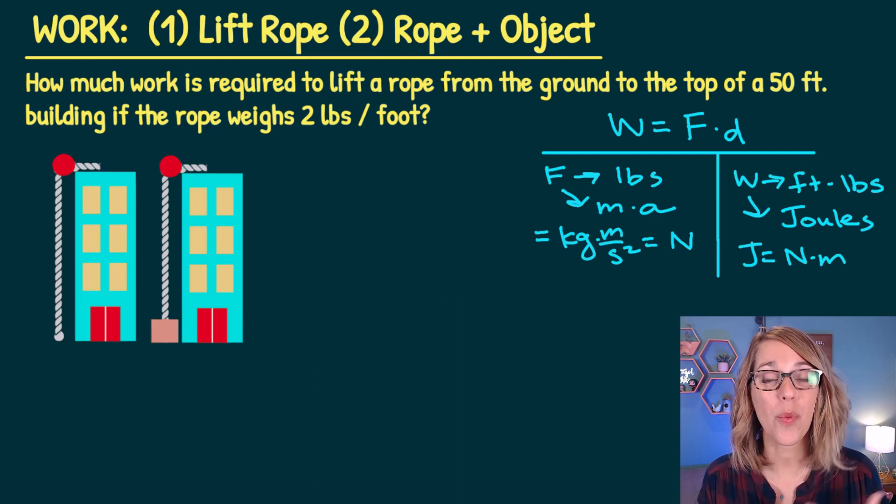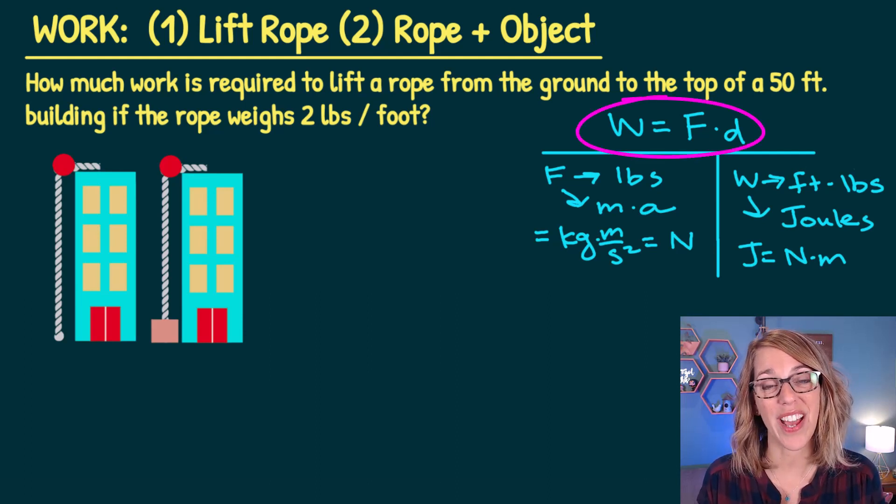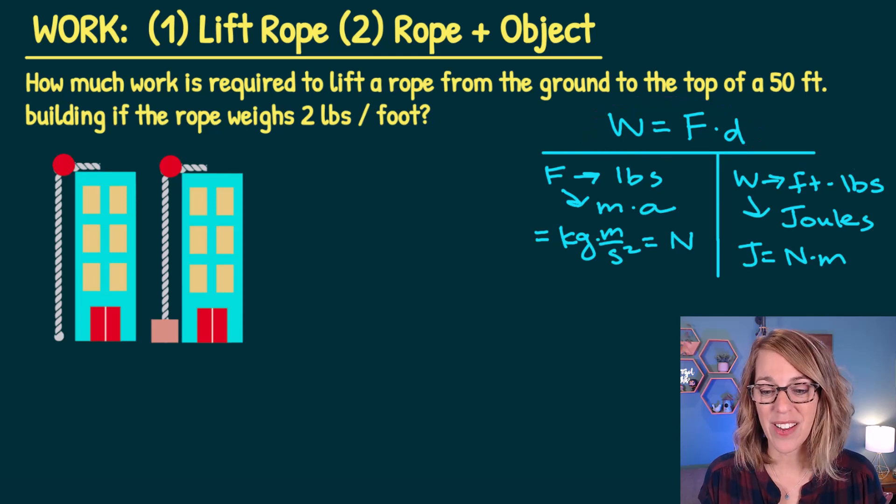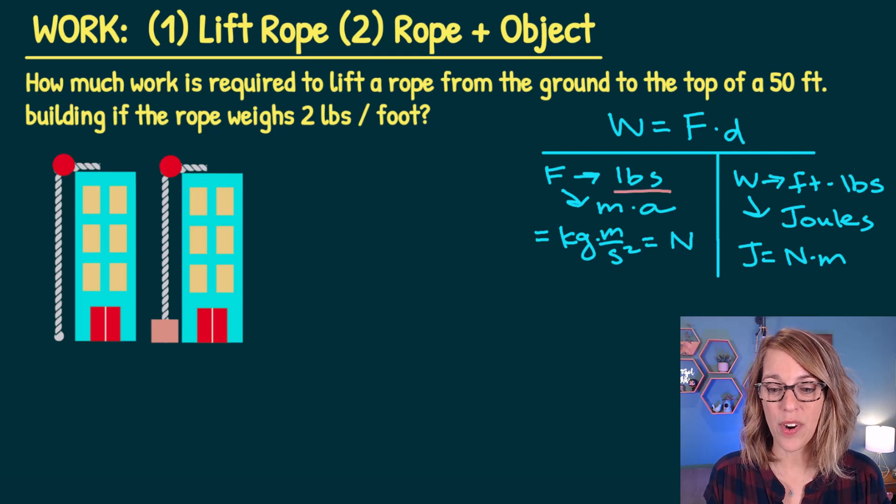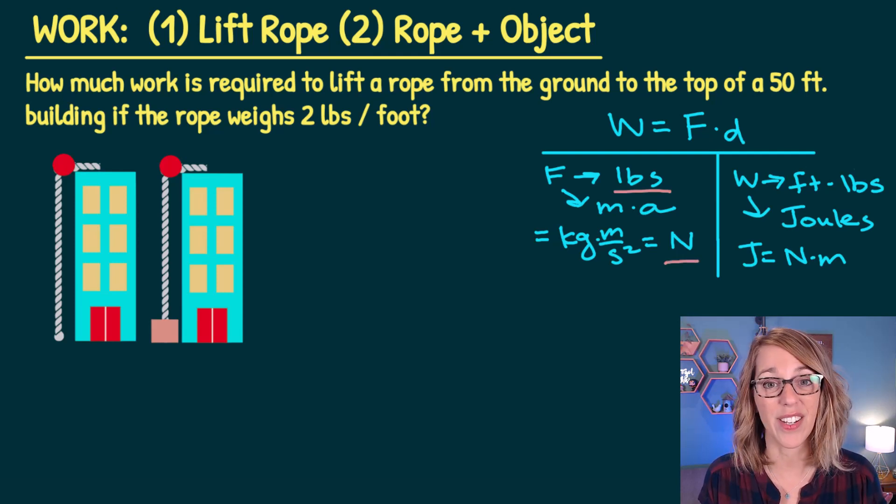Let's learn about work. Work is equal to force times distance. We can think of that force as either a unit of pounds, or we can think of that force as mass times acceleration, which would give us a unit in newtons.